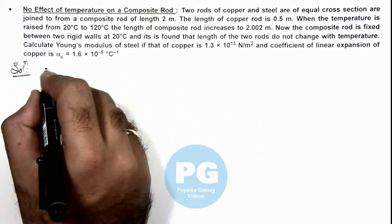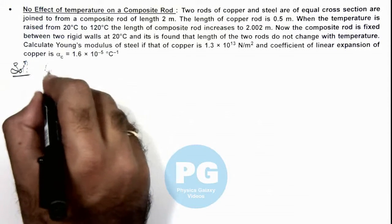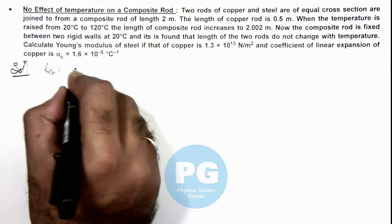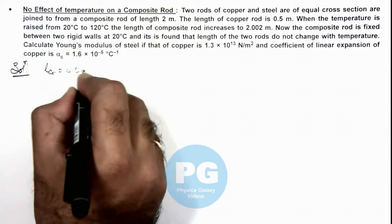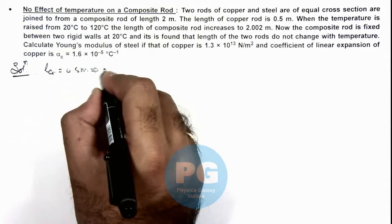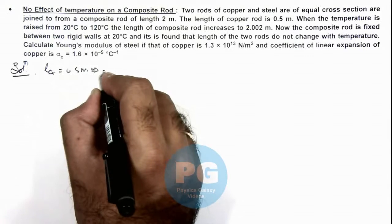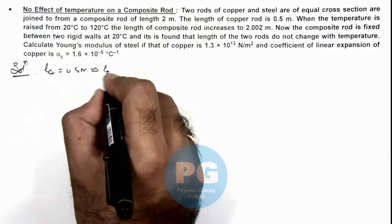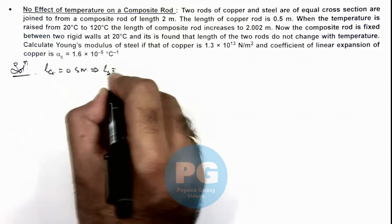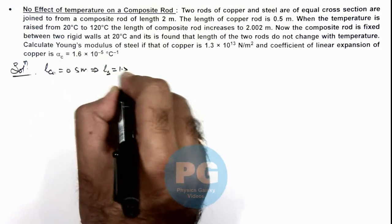Since the length of the copper rod is 0.5 meters, this implies the length of the steel rod will be 1.5 meters.